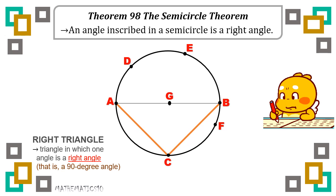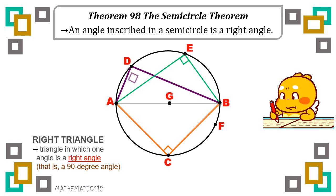For example, as you can see, we have angle ACB or BCA. It intercepts a semicircle, which is semicircle ADB or AEB. Therefore, based on theorem 98, angle ACB is a right angle or it measures 90 degrees. So another example, angle AEB is also considered a right angle. And angle ADB or BDA is also a right angle because it intercepts a semicircle. And angle BFA or AFB is also a right angle — this angle measures exactly 90 degrees. So that is theorem 98.